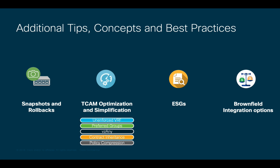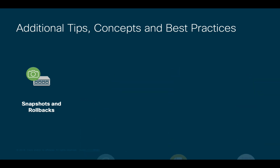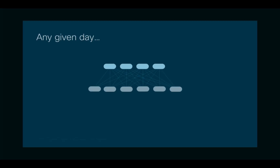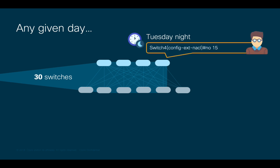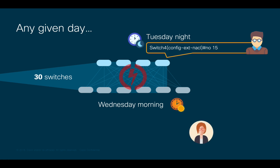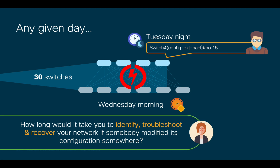Let's get started first by covering snapshots and rollbacks. Imagine the following scenario: you have a network with 30 switches. It's a Tuesday night right before your company's peak season starts, and the new intern decides to delete a line from an extended access list on one of those 30 switches. You get there the following morning and the network is down. How long would it take you to identify the error amongst all those 30 switches to troubleshoot and recover the network? Probably a while, right?